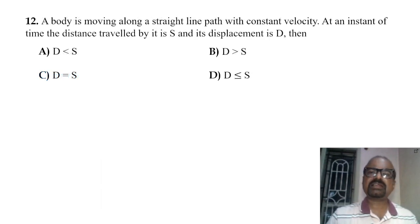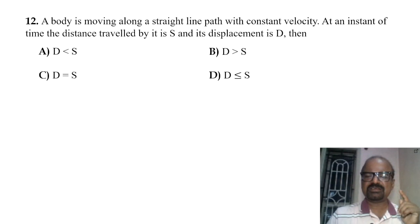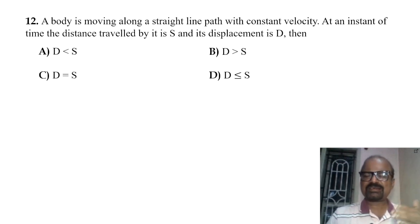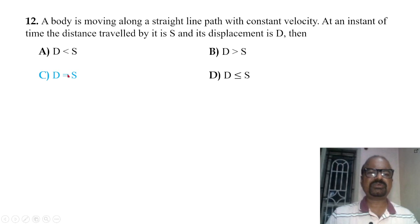A body moving along a straight line path with constant velocity: at any instant of time, the distance covered is s and its displacement is d. For straight-line motion, displacement and distance covered are the same, so d equals s.